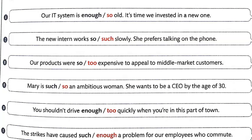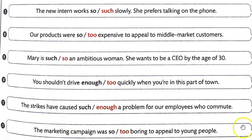Number ten: 'You shouldn't drive too quickly when you're in this part of town.' Number eleven: 'The strikes have caused such a problem for our employees who commute.' Number twelve: 'The marketing campaign was too boring to appeal to young people.' Alright, and that's the end of lesson 18. I'll see you for a new unit — Unit 4 and Lesson 19.